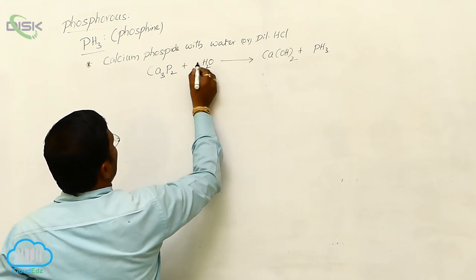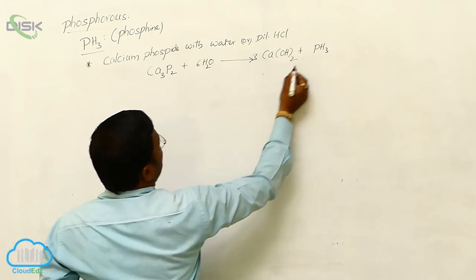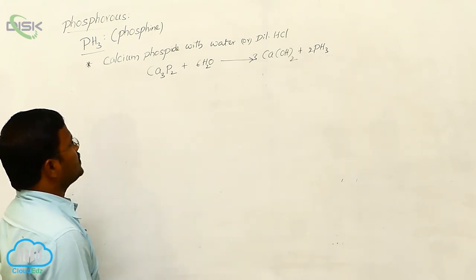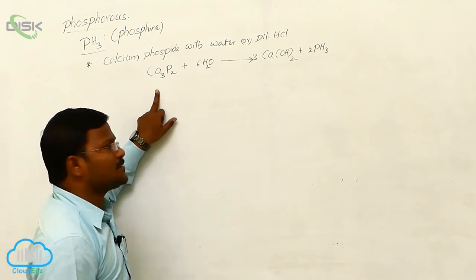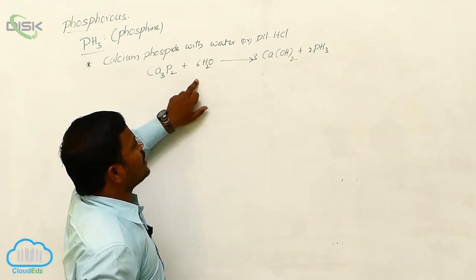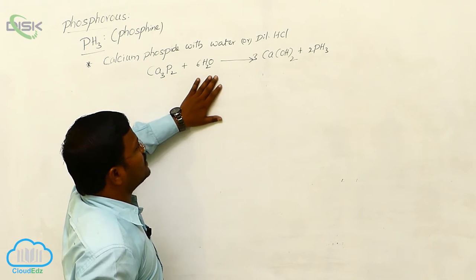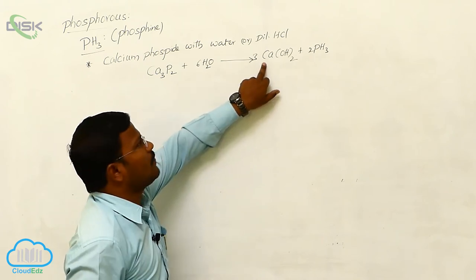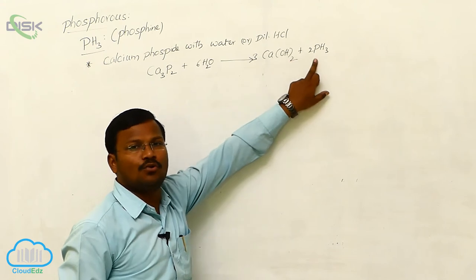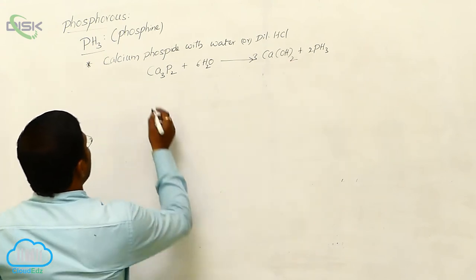So we can conclude here, 6 here, 3 and 2. That means 1 mole of calcium phosphide undergoes hydrolysis by reacting with 6 moles of water to produce 3 moles of calcium hydroxide and 2 moles of phosphine.